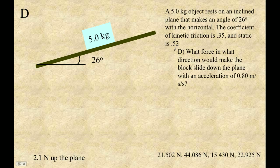All right, welcome to Part D. A 5-kilogram object resting on the plane. What force in what direction would make the box slide down the plane with an acceleration of only 0.80 meters per second squared?